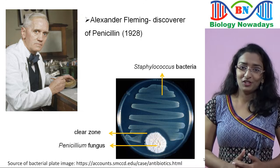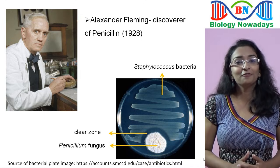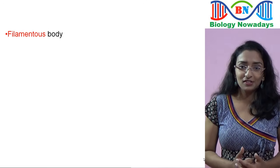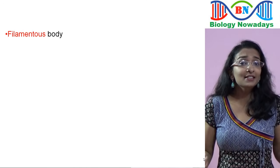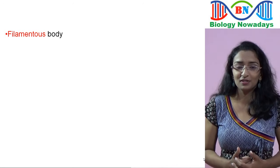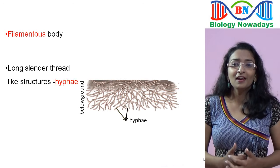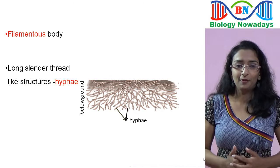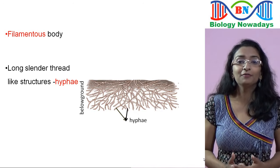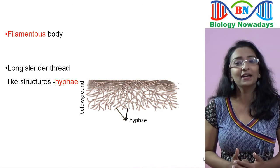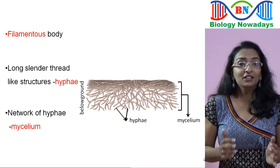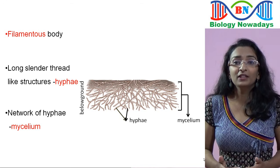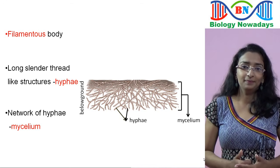So now we come back to Kingdom Fungi. Fungi, except yeast, have a filamentous body structure. These long slender thread-like structures are called hyphae. Hyphae is the plural form and hypha is the singular form. The network of hyphae is called mycelium. Within 24 hours, an individual fungus may produce more than a kilometer of new mycelium.